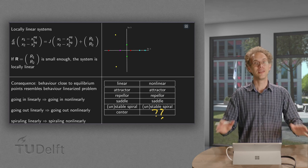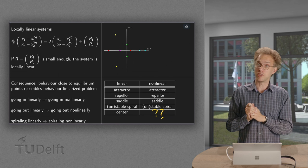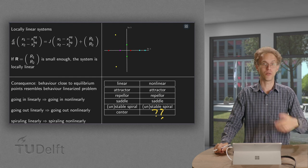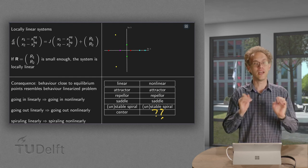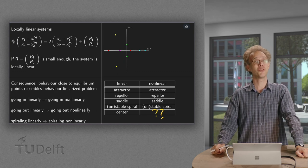So fortunately, the linearized systems around all the equilibrium points give us a lot of information about the non-linear system. Only if you happen to have a center or double eigenvalue, then we do not know what's going on non-linearly. But all the other cases, we are fine.